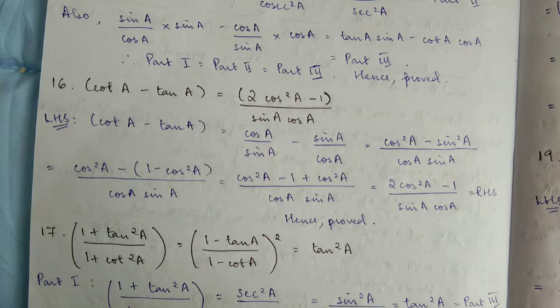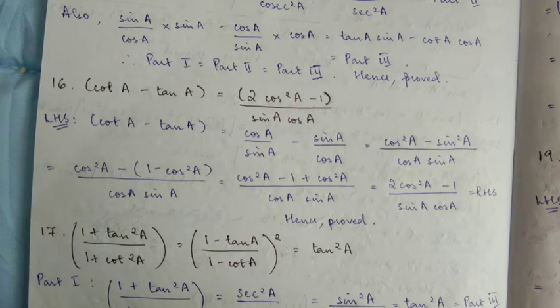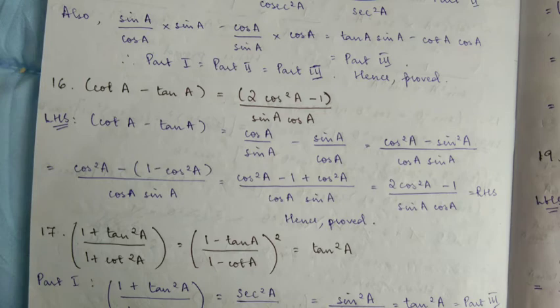Right hand side: multiply — sin A × sin A = sin²A. So we have cos²A minus sin²A. The bracket is minus, so multiply it — bracket equals: cos²A. So 2cos²A minus 1 by sin A cos A, which is equal to the right hand side. Hence proved.